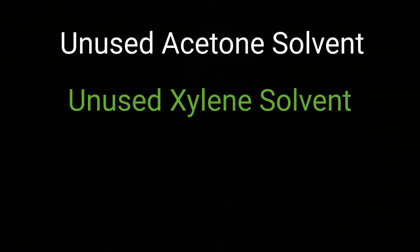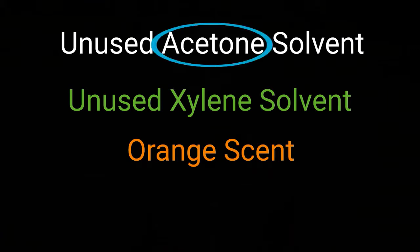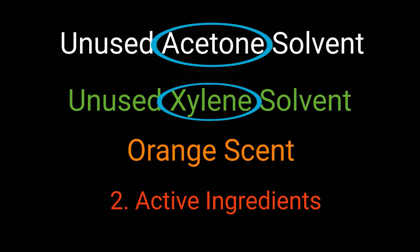In our second example we have unused acetone solvent, unused xylene solvent, and some orange scent that makes up our product. Is there a sole active ingredient here? Well, in this case we have acetone and xylene that both do the same function of the product. So no, this is a product that has two active ingredients and therefore couldn't be P or U listed.